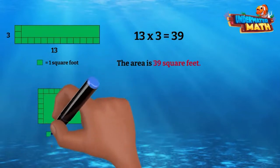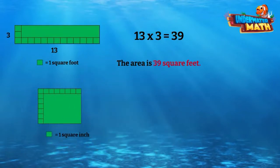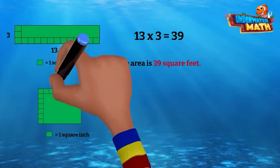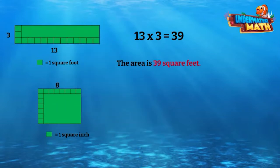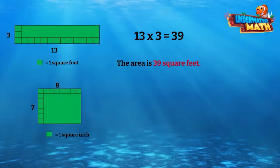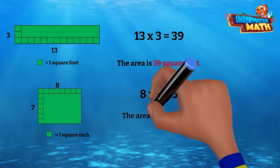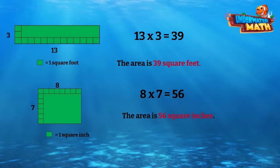Find the area of this rectangle. Each square equals one square inch. Count the squares for length — it's 8. Now count the squares for width — it's 7. 8 times 7 equals 56. The area of the rectangle is 56 square inches.